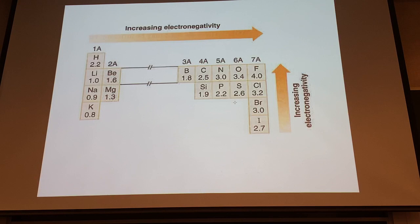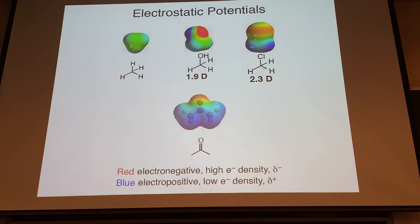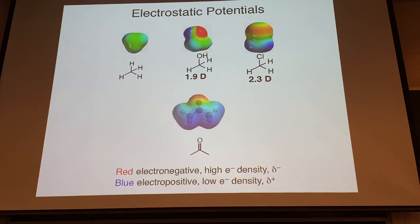Electronegativity — the most electronegative atoms are in the upper right part of the periodic table. Fluorine is 4.0 on the Pauling scale. When you put those bonds together in molecules it changes their properties. Methane is not water-soluble — it's very nonpolar — whereas methanol has two polar covalent bonds. The oxygen and hydrogen are very polarized, and that difference in electronegativity can be very significant.